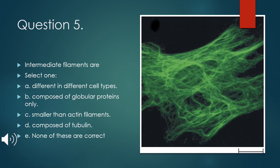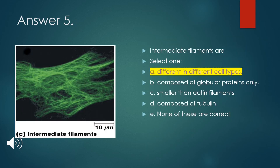Question 5: Intermediate filaments are best described as — A. different in different cell types; B. composed of globular proteins only; C. smaller than actin filaments; D. composed of tubulin; or E. none of these are correct. The right answer for question 5 is A — they are different in different cell types.